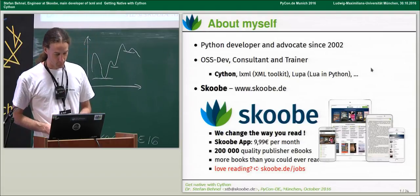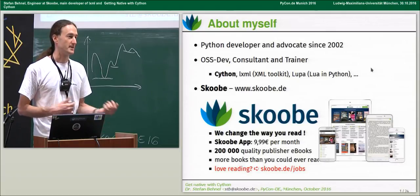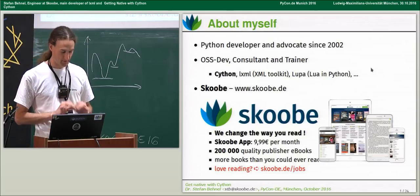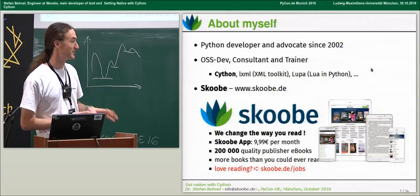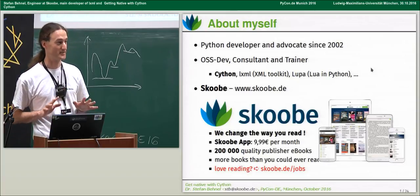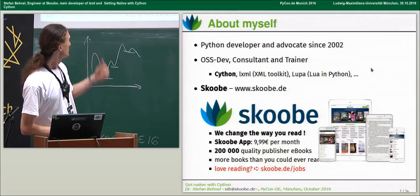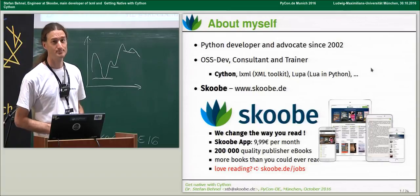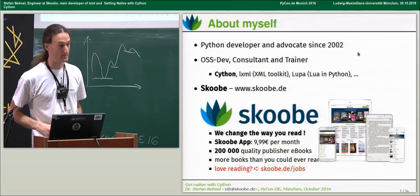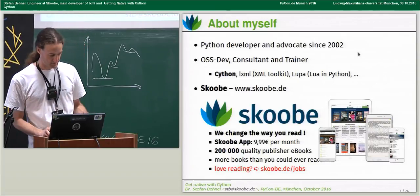Scribd is an ebook subscription service — if you know Spotify, we're the same thing for ebooks. We totally change the way you read: you start using Scribd and you read more. We have an app on Android and iOS with lots and lots of books — all publisher titles, more books than you could ever read.